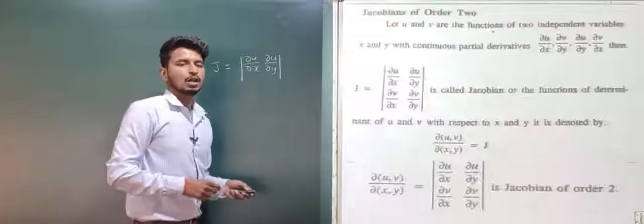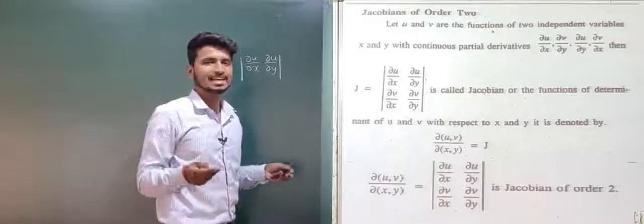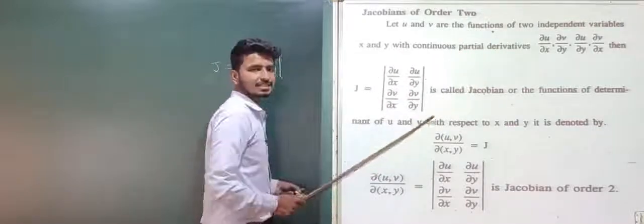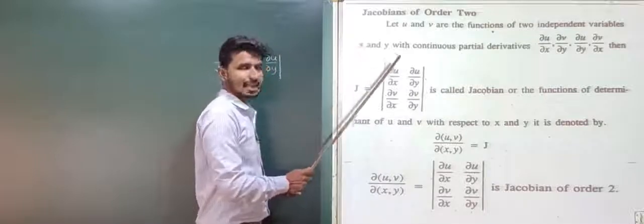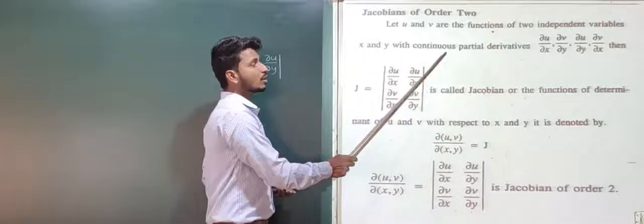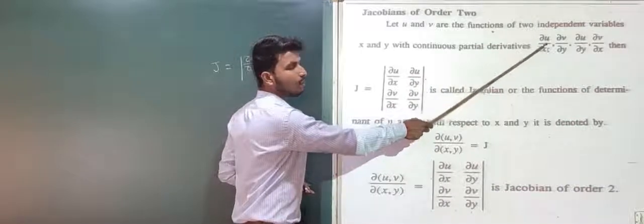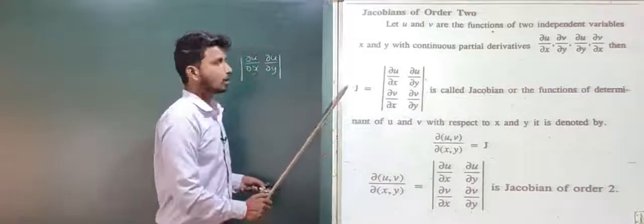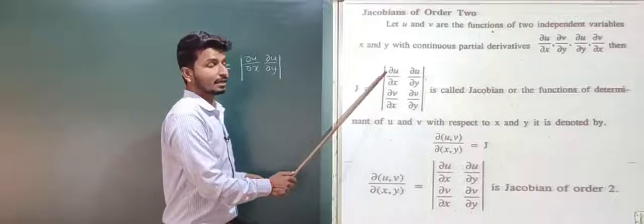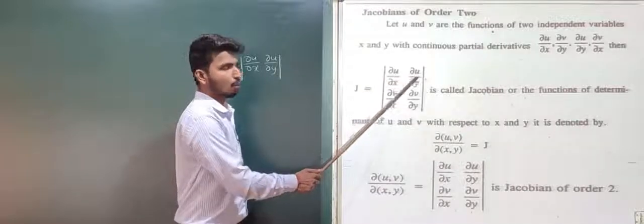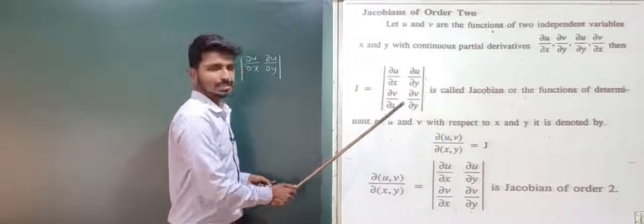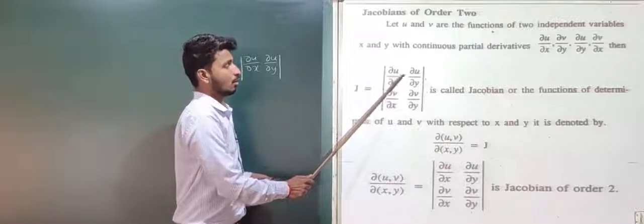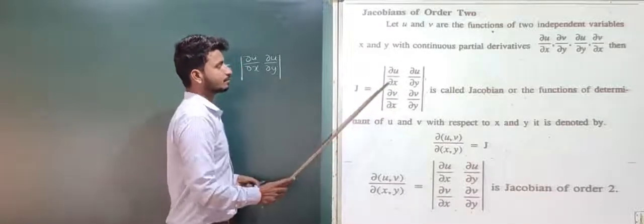Next we will study the Jacobian of order two. Here we consider two functions: let u and v be functions of two independent variables x and y, with continuous partial derivatives ∂u/∂x, ∂u/∂y, ∂v/∂x, ∂v/∂y. The Jacobian of order two can be written in determinant form as: first row ∂u/∂x, ∂u/∂y and second row ∂v/∂x, ∂v/∂y.